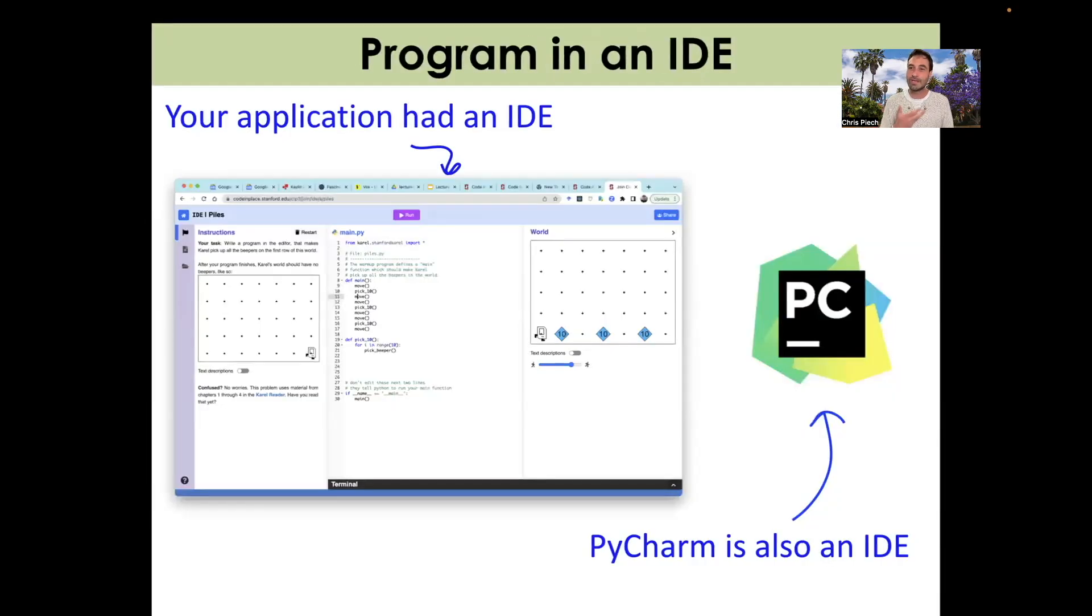When we program, we use an application that has a fancy name. And the fancy name is IDE. It stands for Integrated Development Environment. But what it means is the application where you do your coding. There are many. We have our very own for Code in Place. We think it's like the world's coolest, especially for people who are learning to program. There's other ones that you can download for your computer, things like PyCharm. We very much recommend that either sometime during the class or after the class, you download one of those IDEs, because it's just great to have it on your own computer. For all of Code in Place, though, you can just use the Code in Place IDE. And you're going to be learning the exact same programming that you learn in any IDE, just with a couple extra tools.